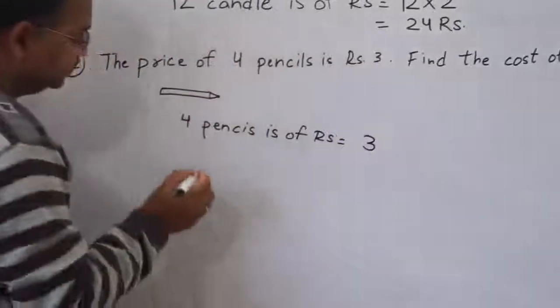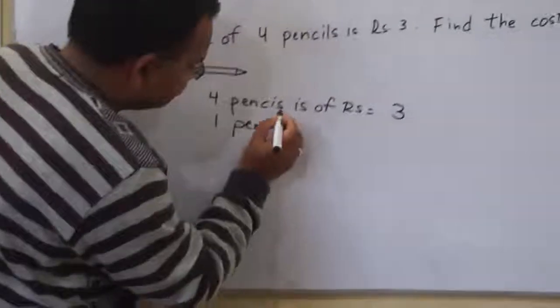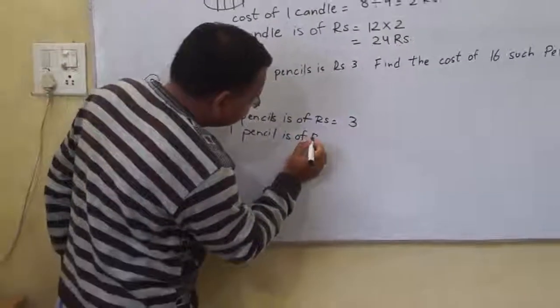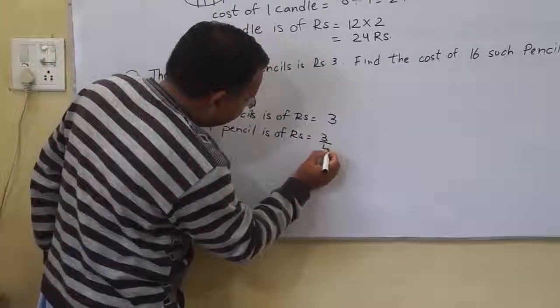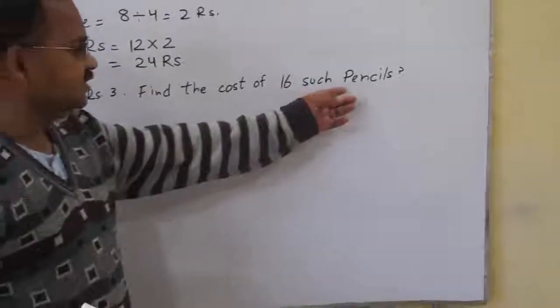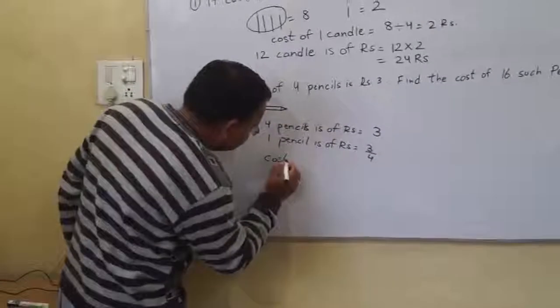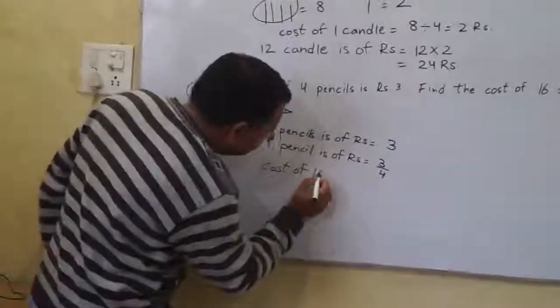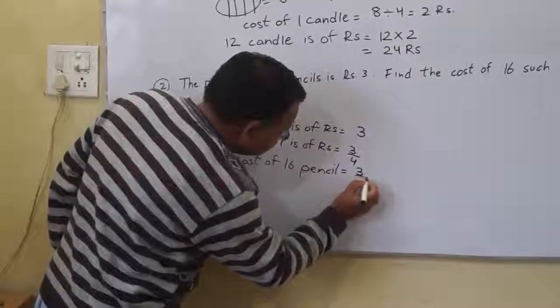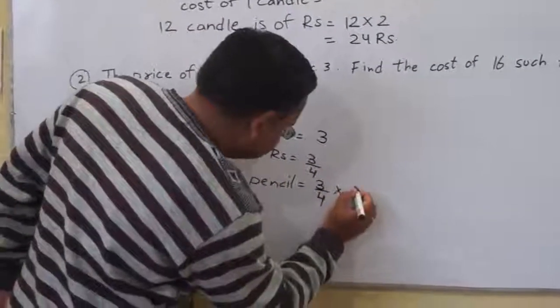1 pencil is 3 divided by 4 rupees. Find the cost of 16 such pencils. The cost of 16 pencils is 3 divided by 4 multiplied by 16.